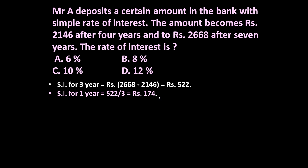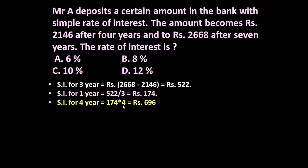Now let us determine the simple interest for 1 year. 522 divided by 3 is equal to 174. So every year he receives Rs 174 as interest. The amount becomes Rs 2146 after 4 years, so the simple interest for 4 years is Rs 174 into 4, which is equal to Rs 696.